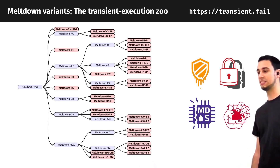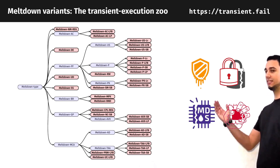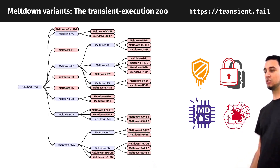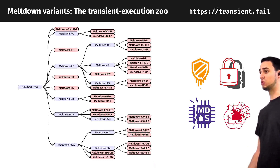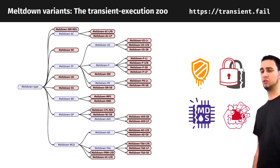Meltdown is not one single attack — it's an entire class of attacks. We can see this in this large tree of all known Meltdown attacks so far, which also includes the Foreshadow attack.